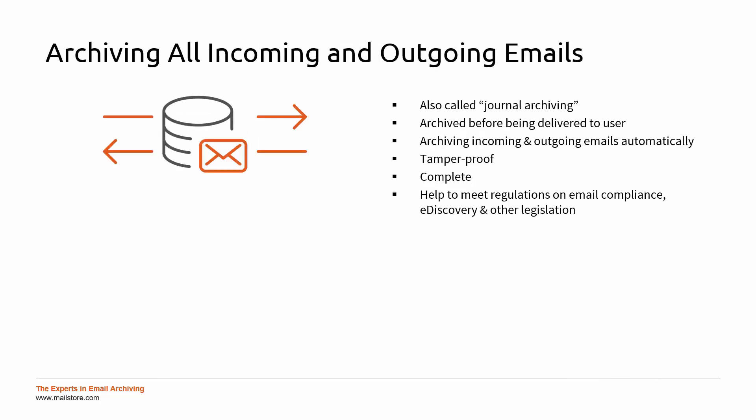Let's first take a look at archiving all email as soon as it is sent and received. When this method is used, all email is archived before being delivered to the user. For this to work, you will need to create a journal rule on your Microsoft Exchange server or within your Office 365 environment. All incoming and outgoing emails will then be automatically copied to a mailbox that you have specified. If you use another server, you can usually still utilize a rule to get this to work. See the implementation guides section on our MailStore Help for a comprehensive list of product-specific guides.